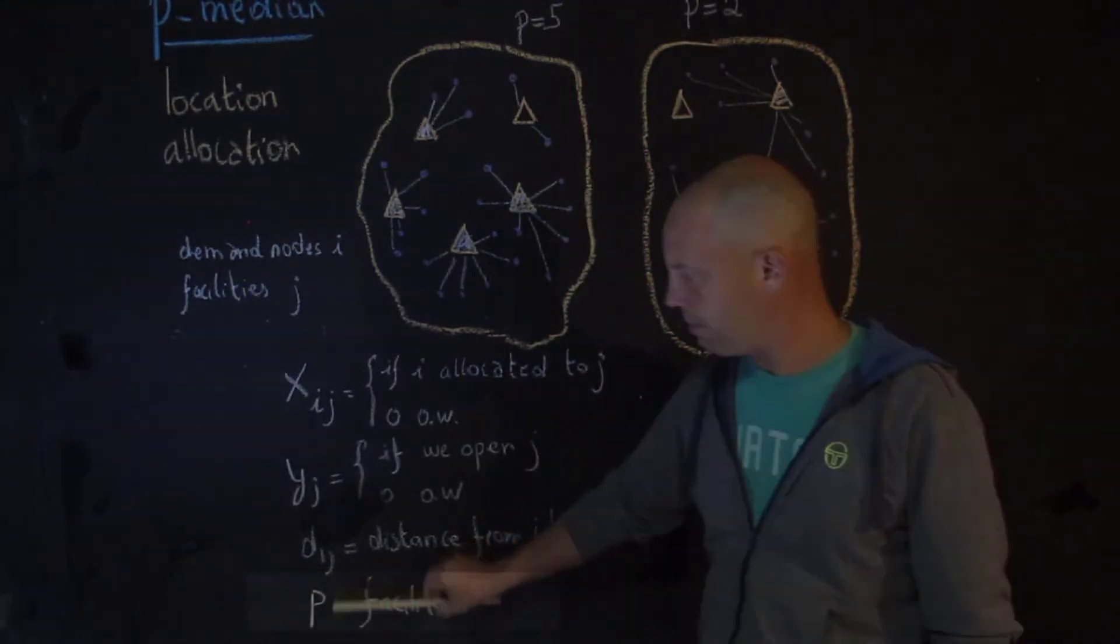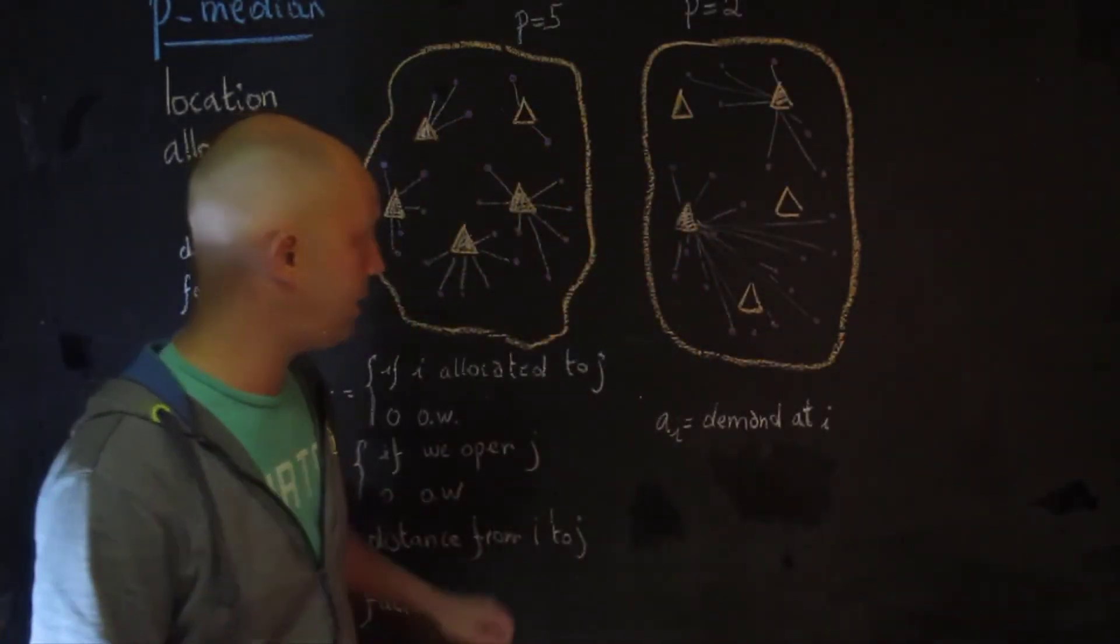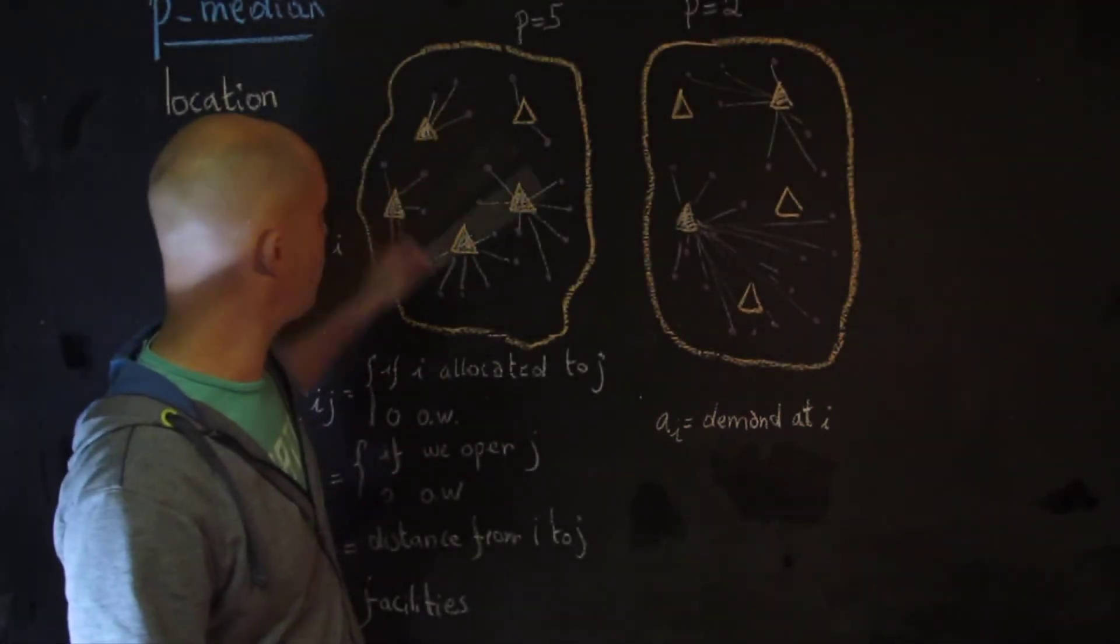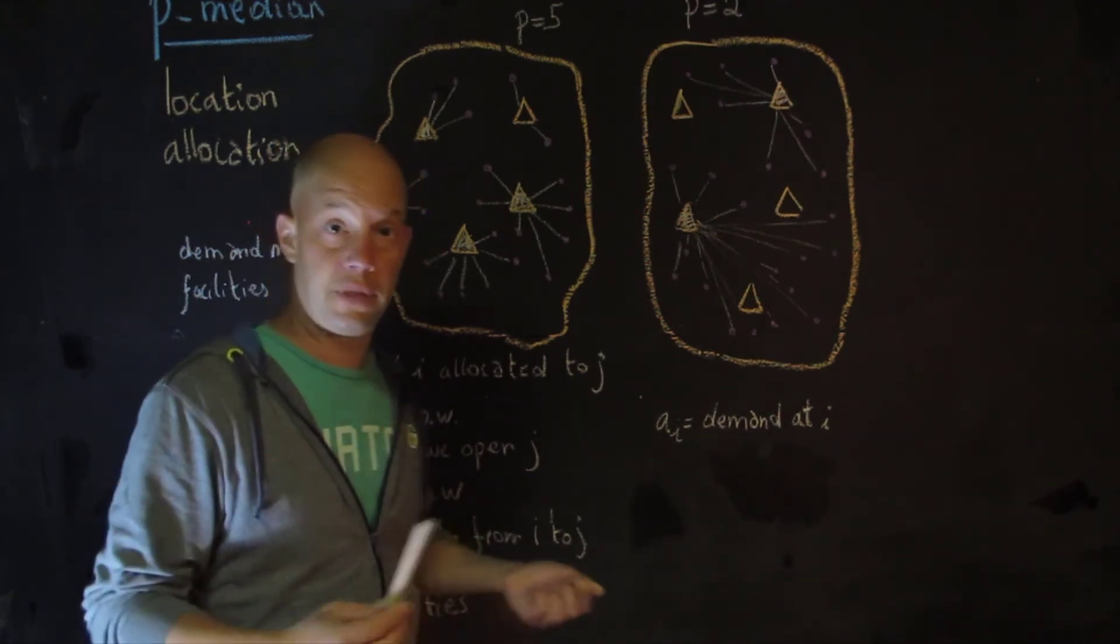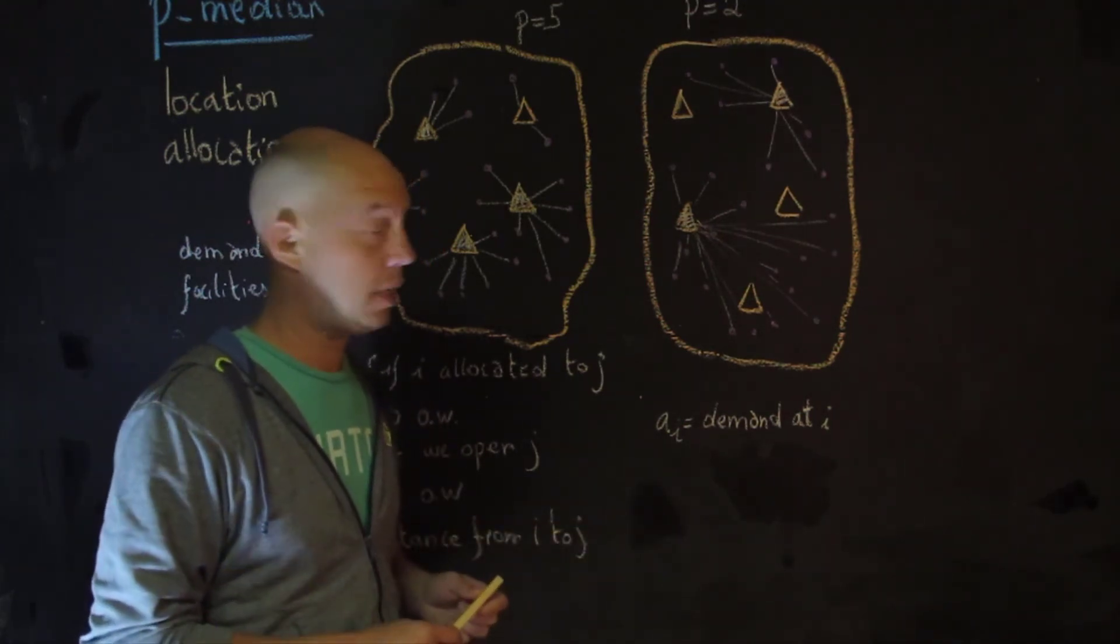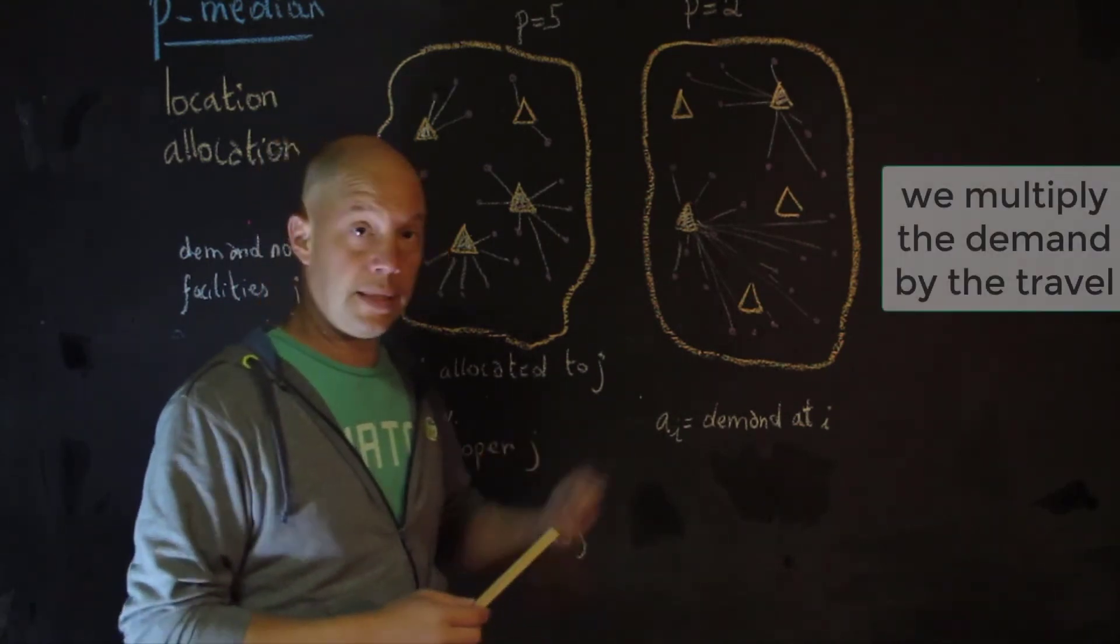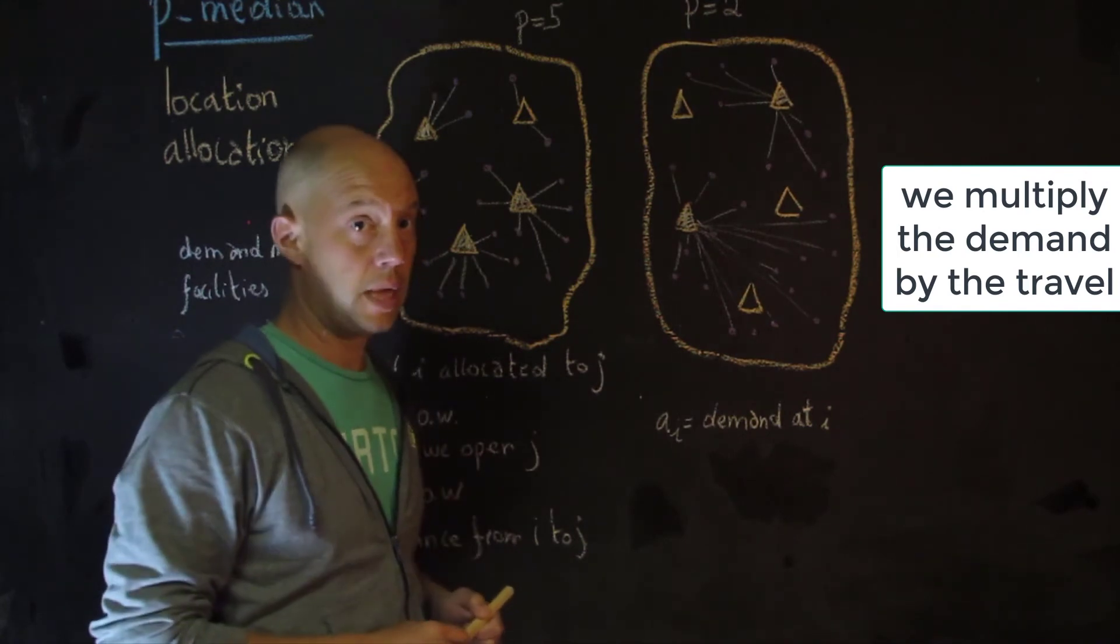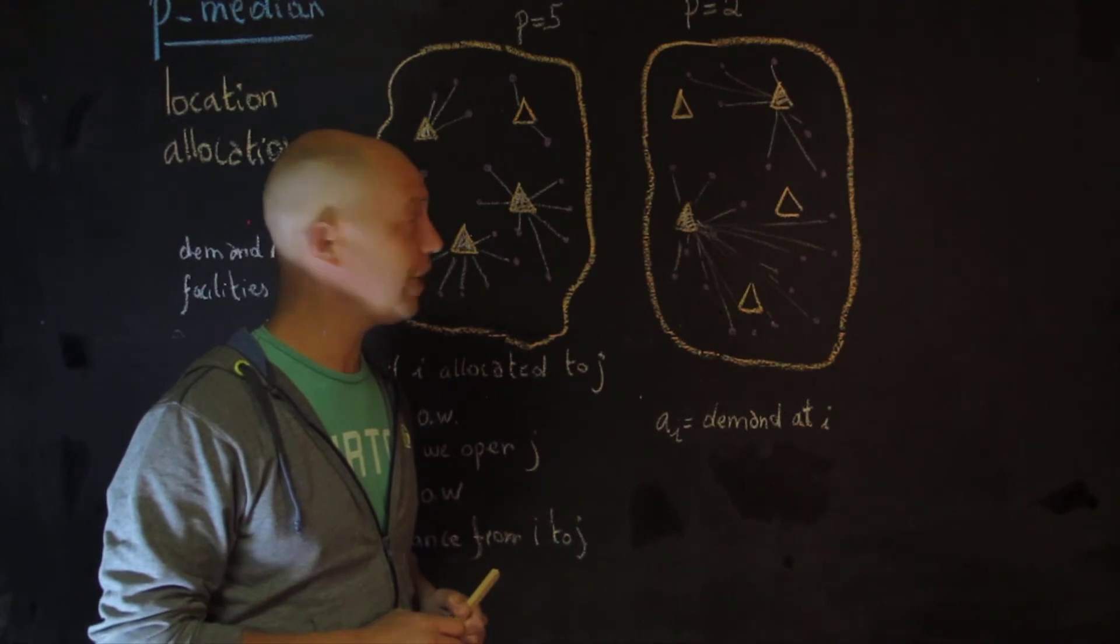Another element that is relatively important is a sub i, which is a demand at i. So it's not just going to be that each of these dots represent one unit. But we're really taking the demand into account, like for the MCLP, we try to maximize the population that was covered. Here, of course, we're going to multiply the distance that the demand has to travel to receive service by the demand, of course. So let's move into the formulation.